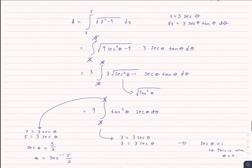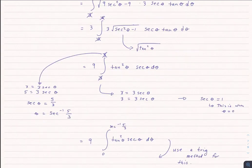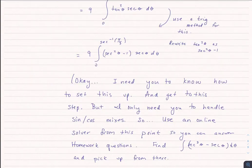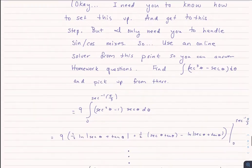Now let's convert the endpoints. At x equals 3: 3 equals 3 secant theta, so secant theta equals 1, which only occurs at theta equals 0. So the lower bound becomes 0. For x equals 5: 5 equals 3 secant theta, so secant theta equals 5 over 3, and theta equals inverse secant of 5 over 3. Rewriting tangent squared in terms of secant squared minus 1 gets quite messy. If you can set it up to this point, I'm happy. I want you to recognize what the substitution is and be able to get to this point.